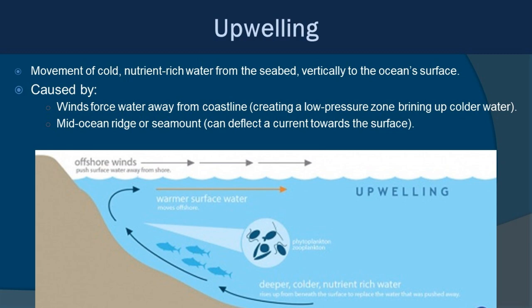One of the classic ways upwelling occurs has to do with offshore wind. With that steady offshore wind, you create a low-pressure zone along the continental margin, bringing up colder water from the deeper areas. Another way this can happen is through the deflection of deep ocean currents through mid-ocean ridges and seamounts that deflect the currents upwards.